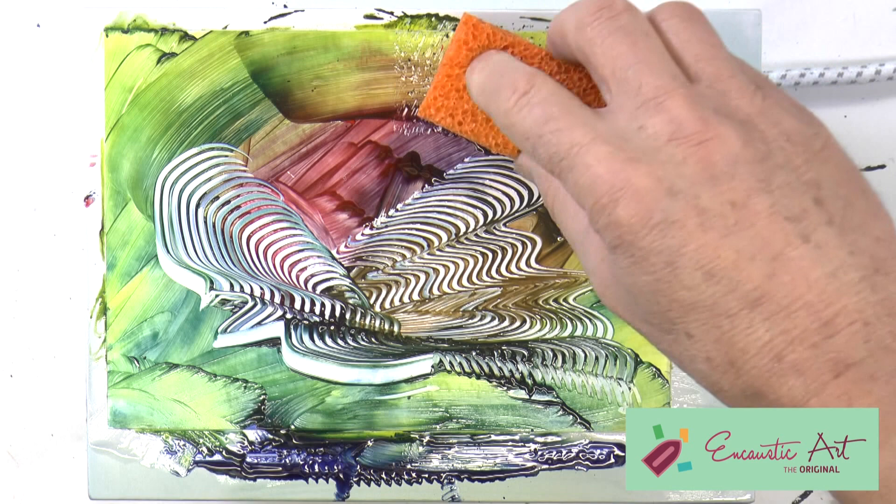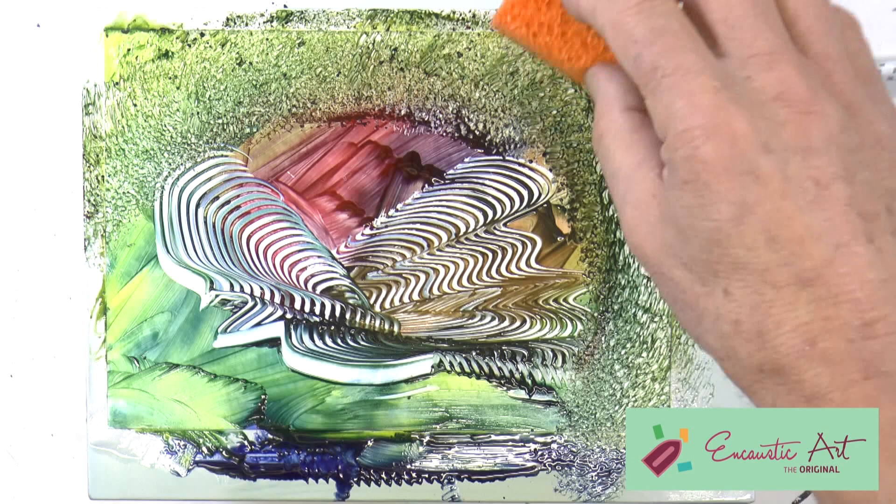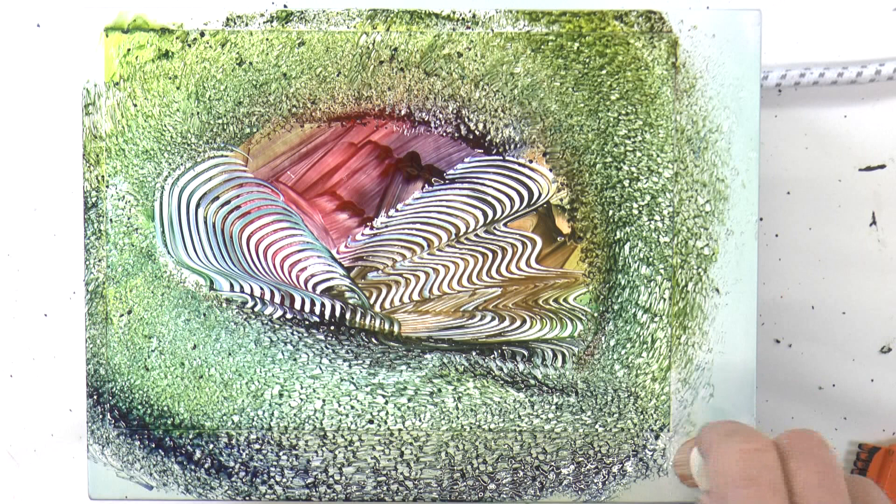A couple of simple real-time marks to give a central interest. Then using that sponge, just dabbing it down to blot out a lot of the detail around the edge, to calm it all down and bring focus to the center.